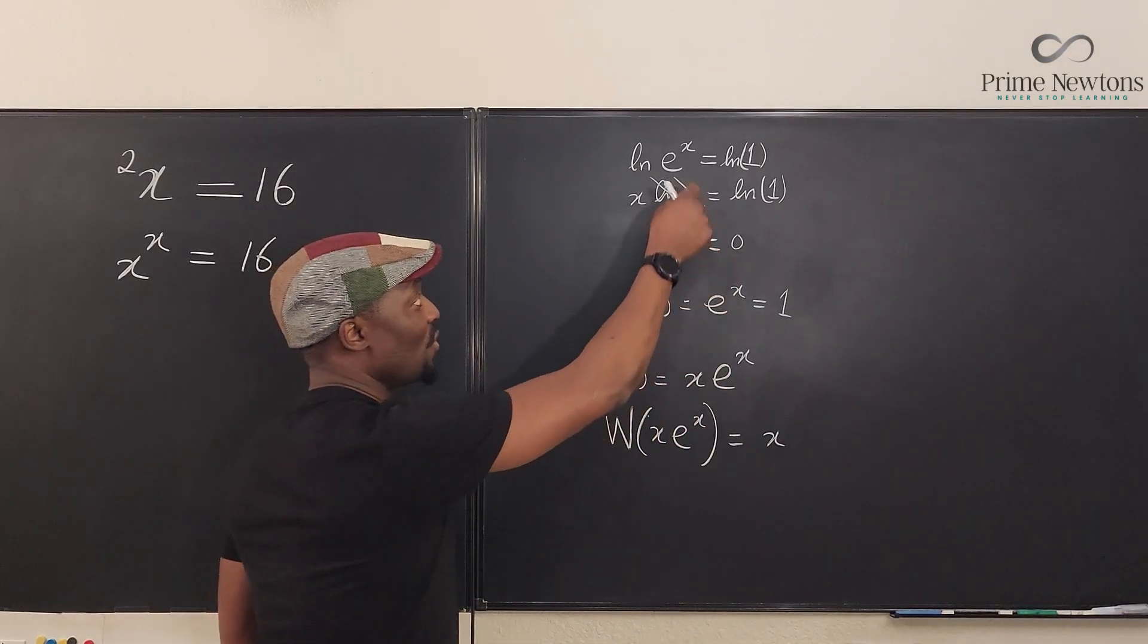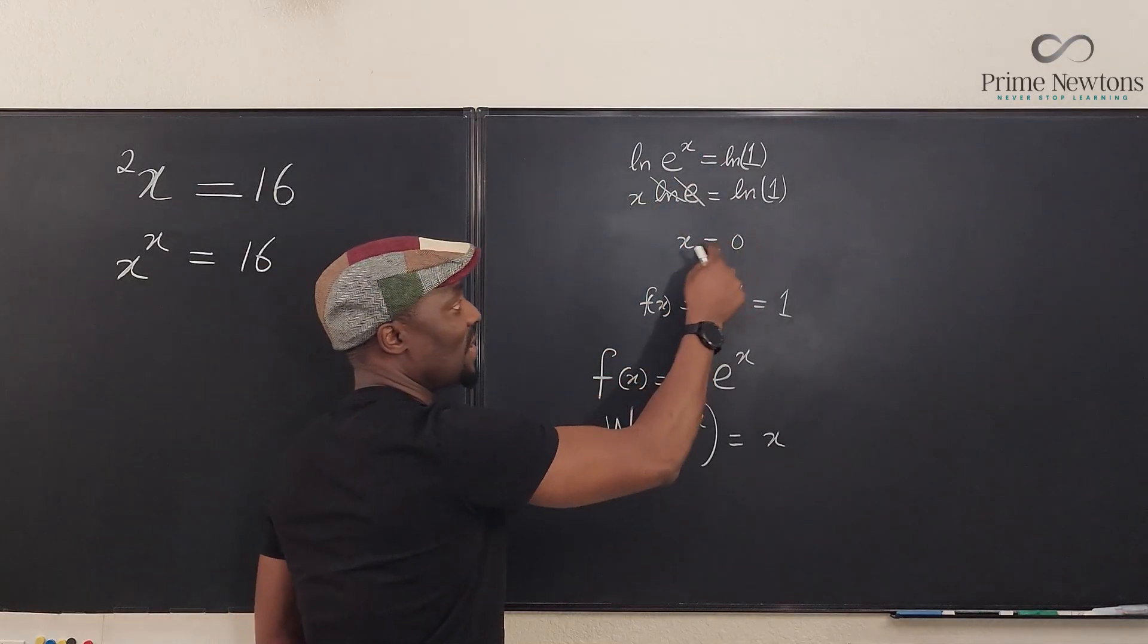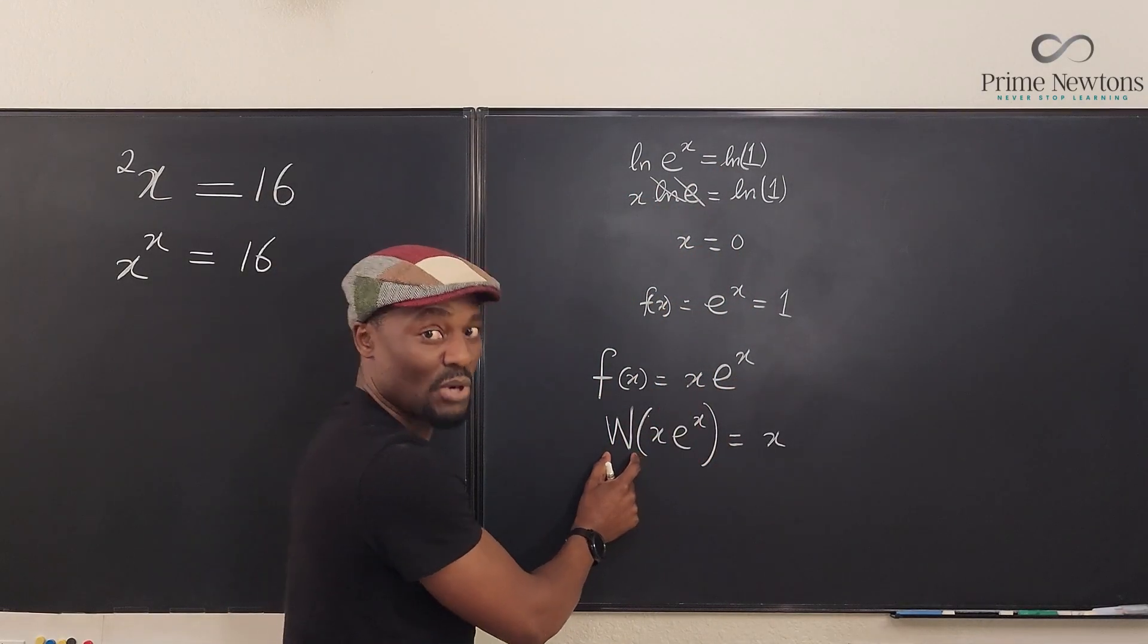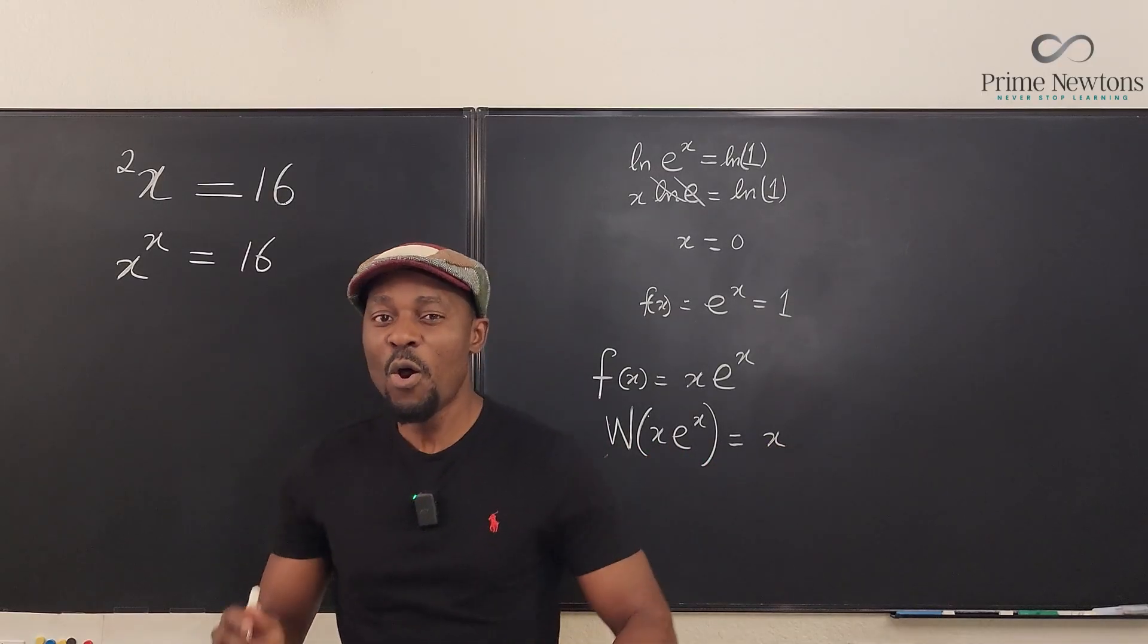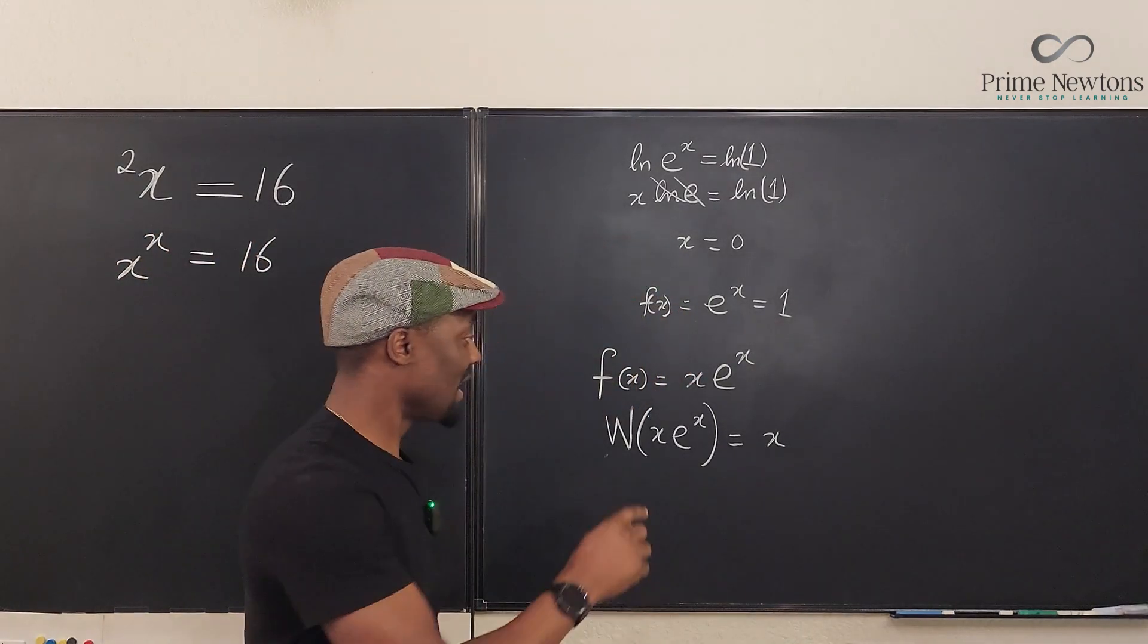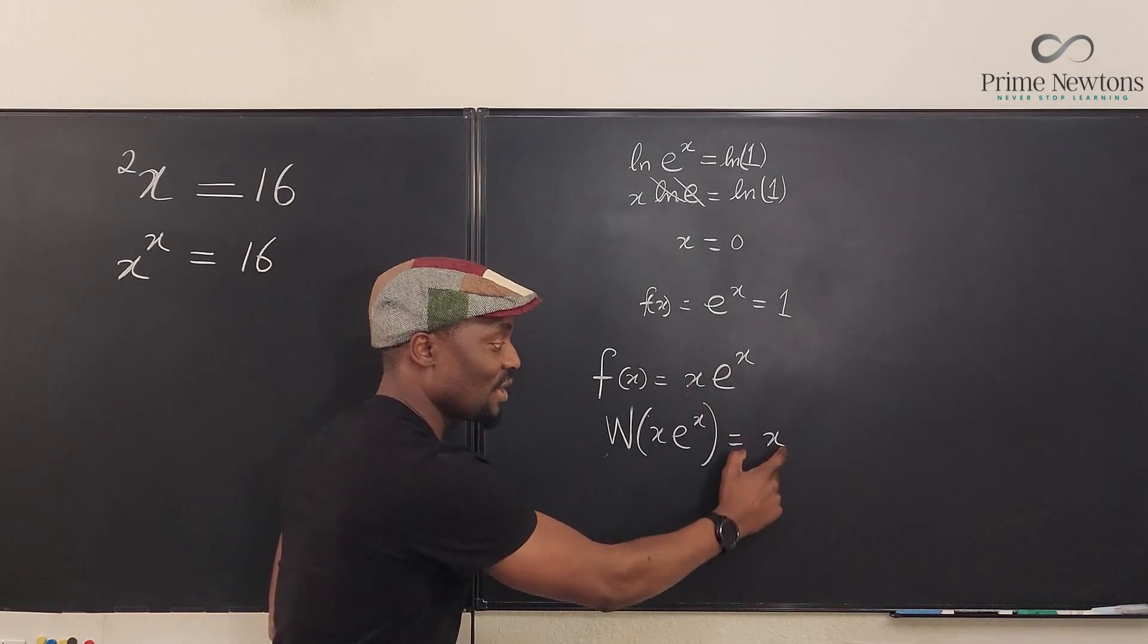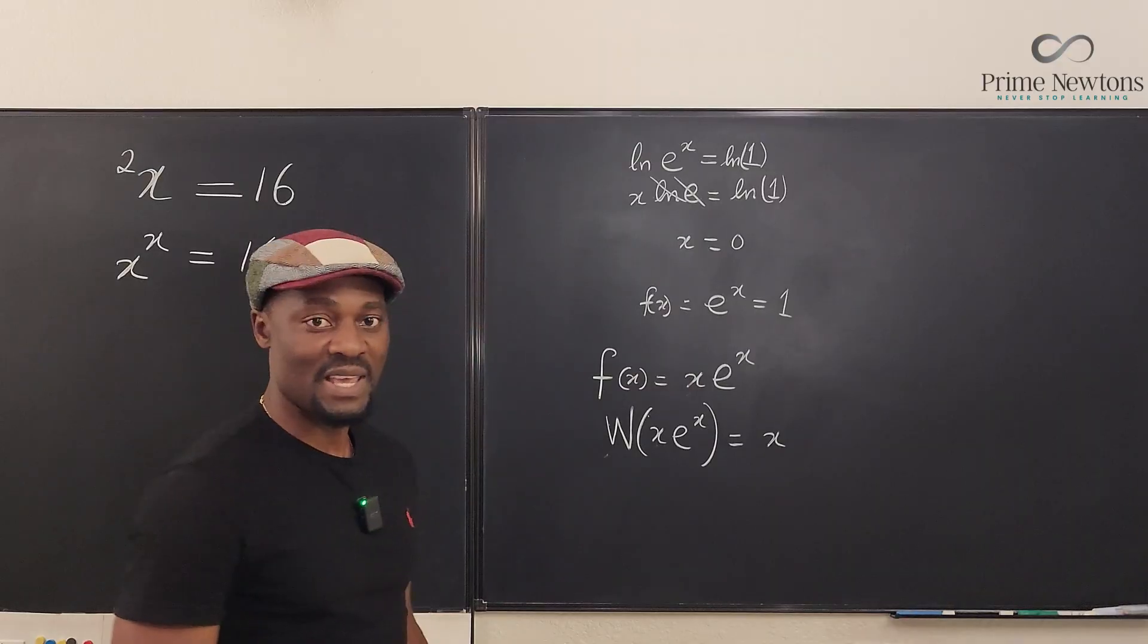Just as we did here, you have to put this inside a natural log function to get your x. The same thing, you have to put this inside a product log function to be able to get your x back. So all we need to do is rewrite this problem in a way that it looks like this. If we can make it look like this, we're gonna get our x, and that's the mission.